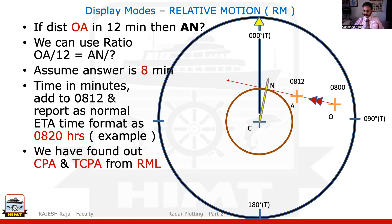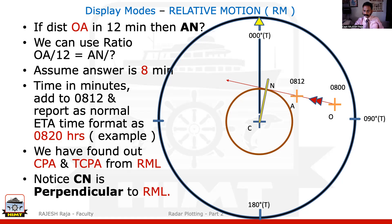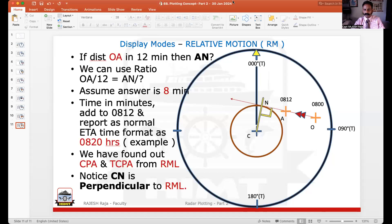There's one more important thing before I close: this CPA range, the line CN, is always perpendicular to the RML. There are other things you are supposed to find in radar plotting, and you should be aware that CN is always perpendicular to RML. That's the end of today's video. I'm limiting my time to 10–12 minutes and I'll catch you soon with the next step, doing this step by step. Keep watching Jal Prayag. Vanakam. Namaste. Namaskar. I'll catch you soon with the next episode.